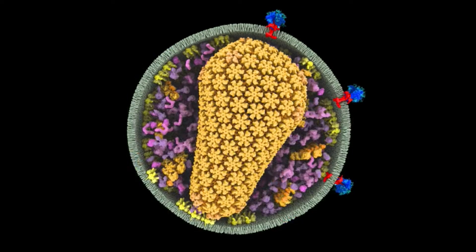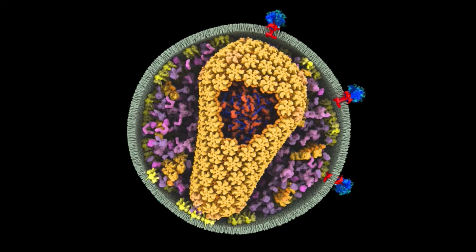In this cross-section, the conical-shaped capsid, shown in orange, houses the RNA genome, shown in blue. Accessory proteins are shown in purple.